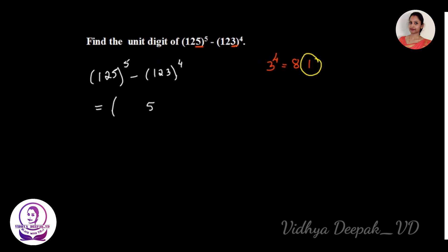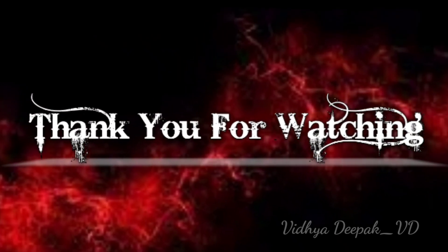So we have the last digit of the first term as 5 and the last digit of the second term as 1. Therefore, 5 minus 1 equals 4. The unit digit of the given expression is 4. Such problems commonly appear in competitive exams. Thank you for watching.